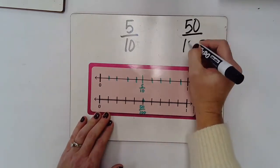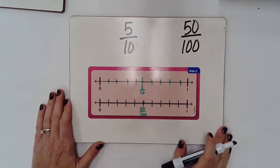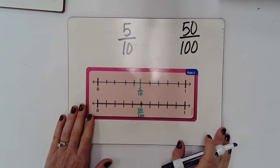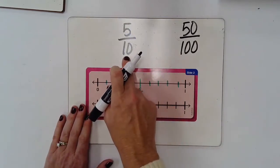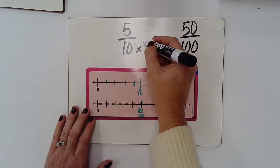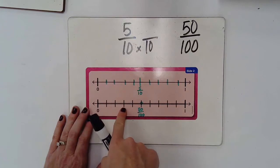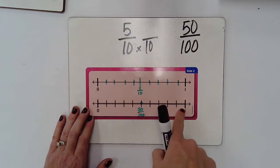We know what that looks like on a number line, but what would that look like using multiplication? So one thing I could think about is how I could get from ten to a hundred, and I know I could multiply by ten, because I gave each ten ten more spaces down here.